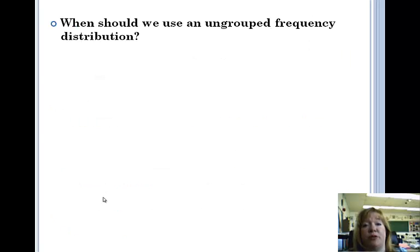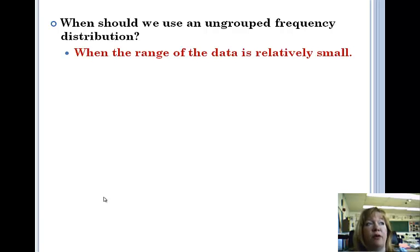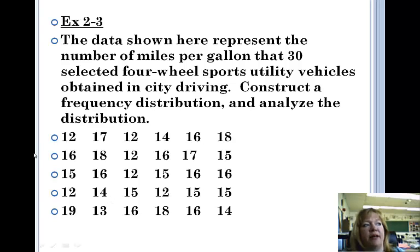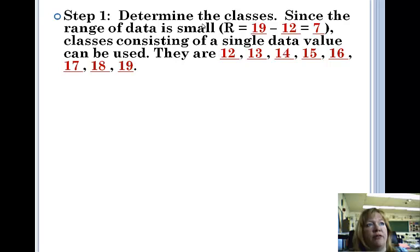Alright. When should an ungrouped frequency distribution be used? That's if you have a range that's very small. The example they give is miles per gallon for SUVs. And in each data class, there's just going to be one value. So in this case, here was our data, these are the miles per gallon for all these SUVs, sports utility vehicles obtained in city driving. Construct a frequency distribution and analyze the distribution. So on this guy, we're first going to determine the classes. The classes are small. 19, that's our high value, minus 12, our low value, we got 7.